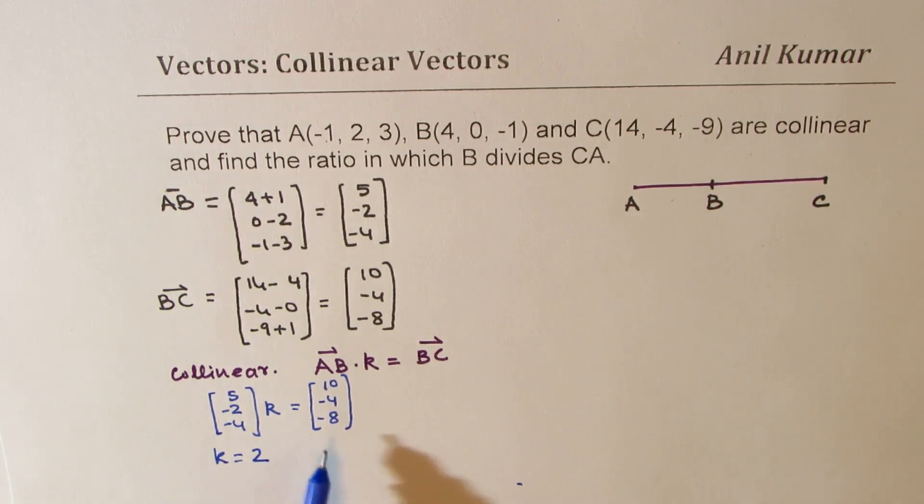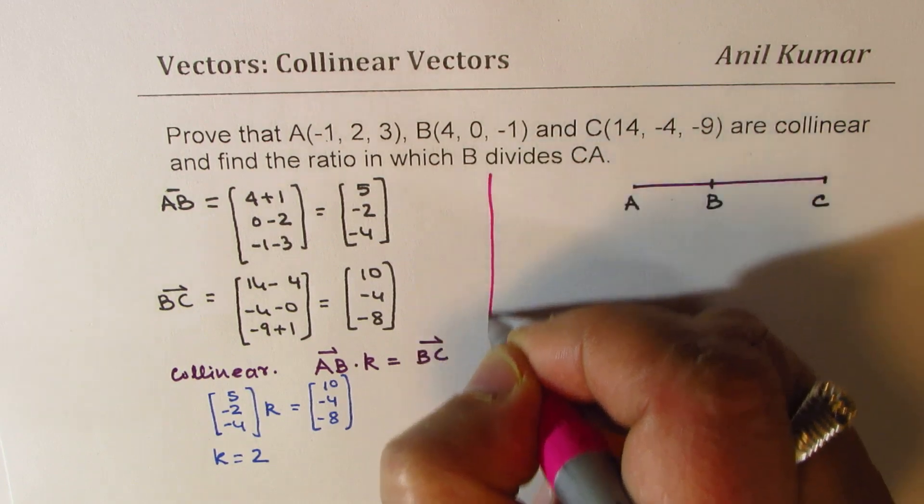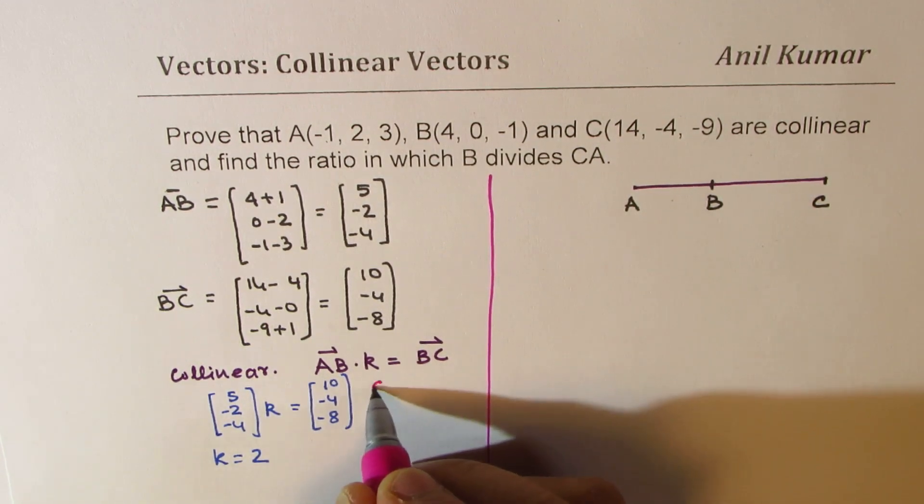So that means they are scalar multiples. So they have the same direction. So in the first part when we say they are scalar multiple, it means same direction.